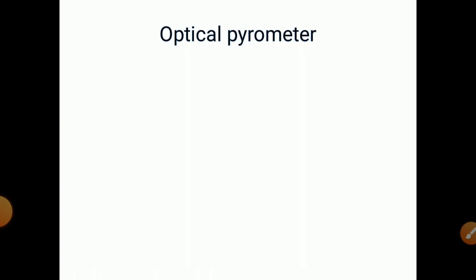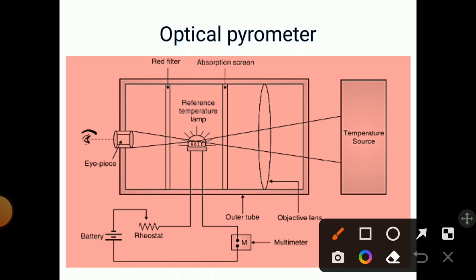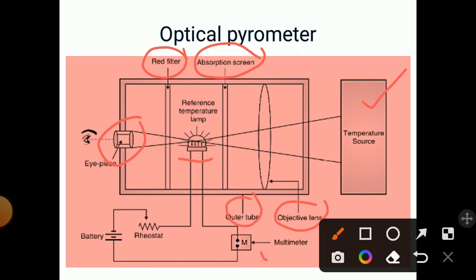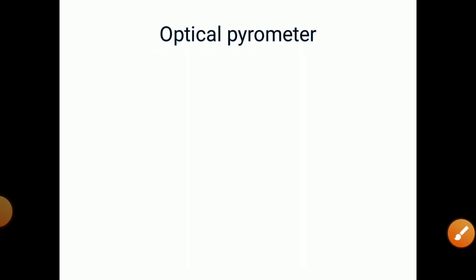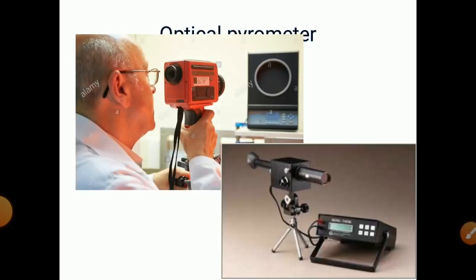The diagram of the optical pyrometer is shown here. One lamp provides the reference temperature, and there is an eyepiece on the other side. Filters — a red filter — are used, along with an absorption screen and objective lenses, all enclosed within an outer tube. A multimeter, rheostat, and battery supply the lamp. This is the construction of the optical pyrometer — if dark or bright light is observed, we can determine whether the source is cooler or hotter.